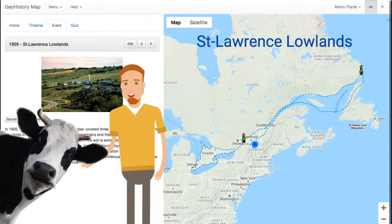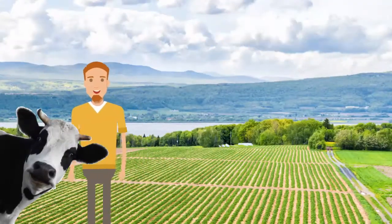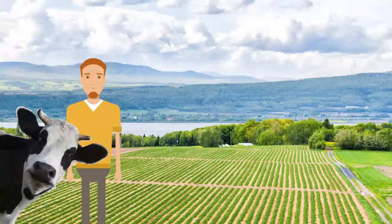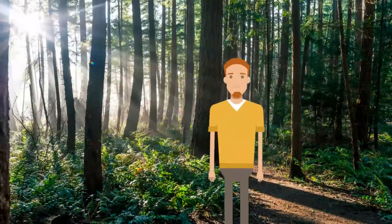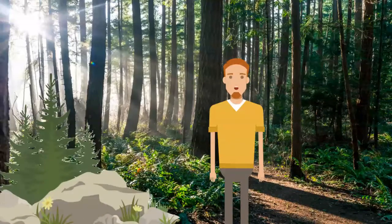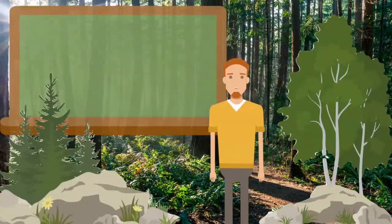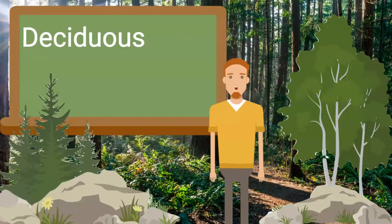Our ancestors worked very hard to clear all that land under the seigneurial system. You will find all sorts of trees in the St. Lawrence Lowlands. The evergreen, such as spruce and fir, but also deciduous trees. Deciduous trees lose their leaves in the fall.